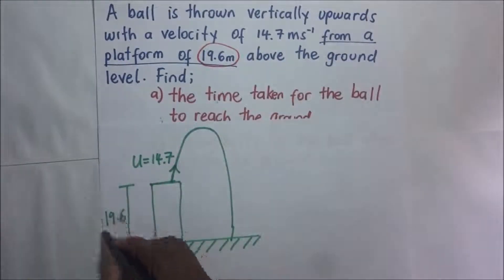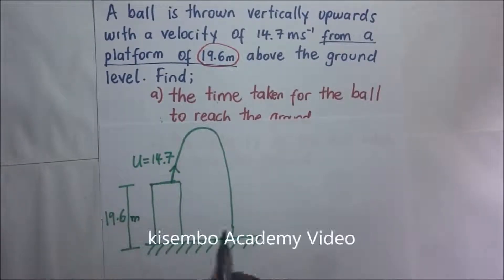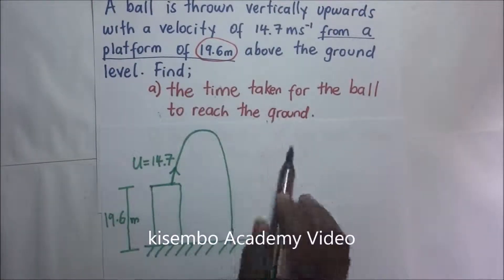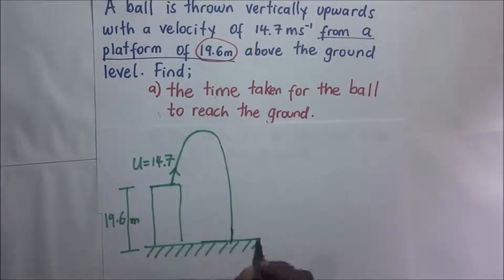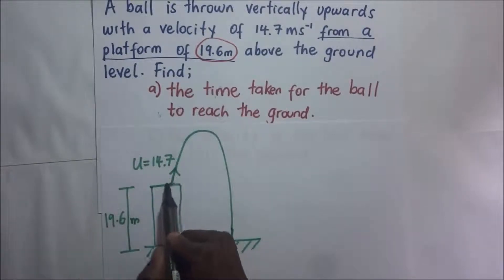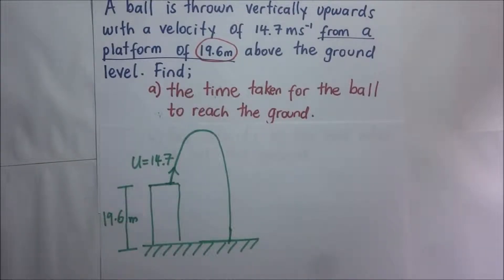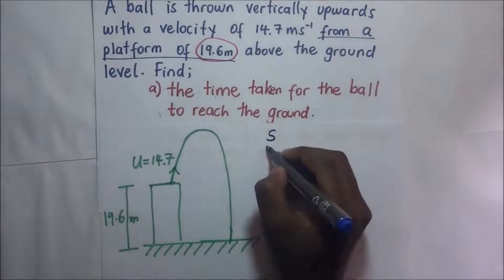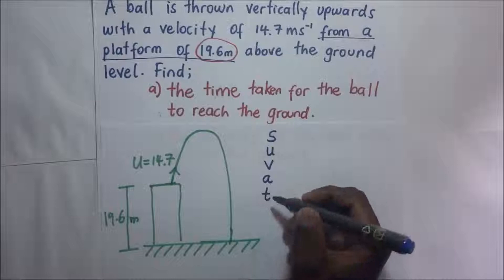From a platform that is 19.6 meters above the ground. They're asking us to find the time taken for the ball to reach the ground — the ball goes up then comes back down. How long is it going to take? Let's analyze the parameters. In motion in a straight line we have: displacement s, initial velocity u, final velocity v, acceleration a, and time t.